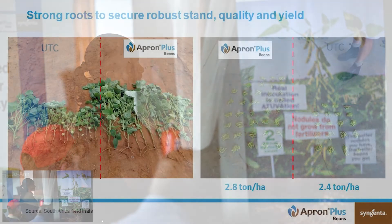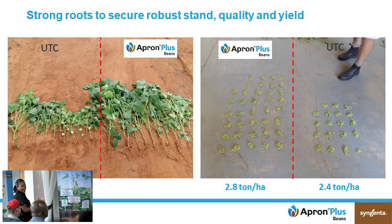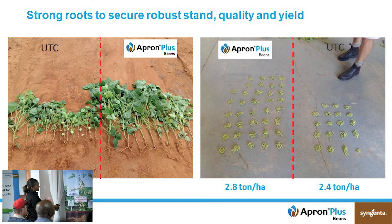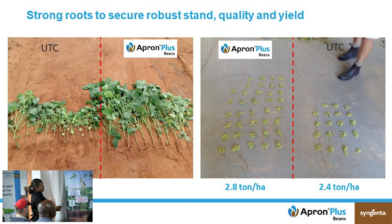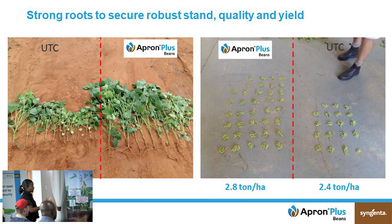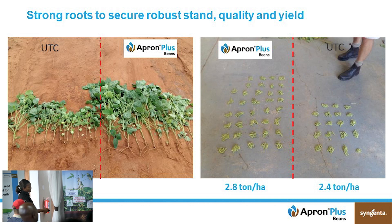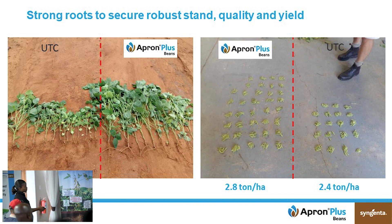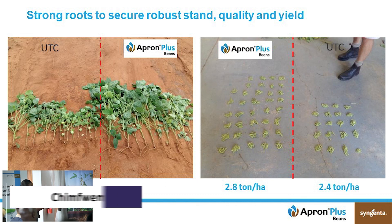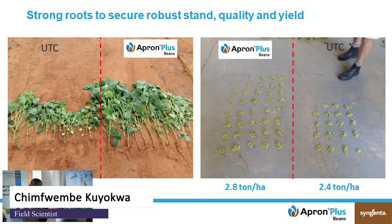When yield was measured, four plants were taken from the untreated control and four from the treated plot. You can see that the plants treated with Apron Plus Beans have more pods, which generates higher yield — there's more pod count here than in the untreated control. On average, there was 2.8 tons per hectare in the treated plots compared to 2.4 tons per hectare in the untreated.